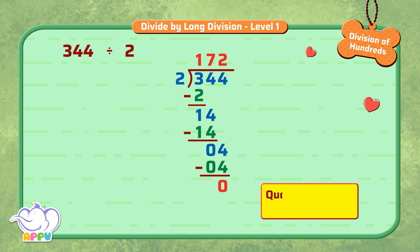So 172 is the quotient and 0 is the remainder. Fine!